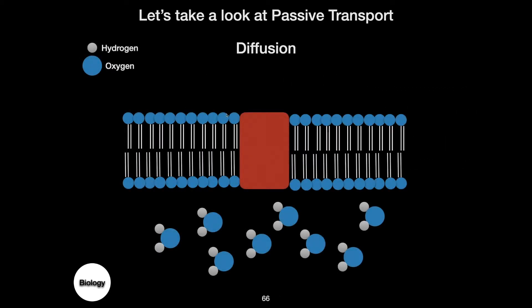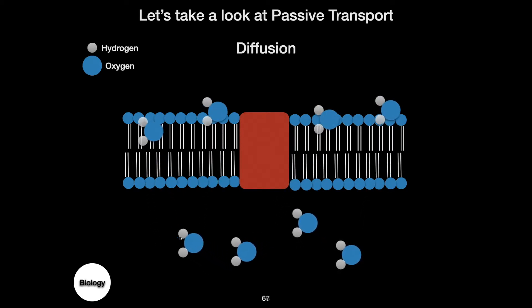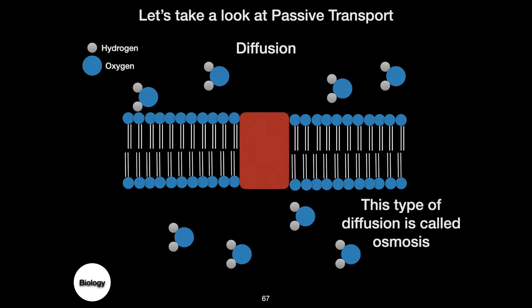Here we have our phospholipid bilayer and an integral protein — a channel protein — but we're not going to use the protein. If you watch these molecules as they move through the membrane, you'll see that they're actually moving through the phospholipid bilayer. In this case, what we're moving is water molecules. When this happens, it is called osmosis. Osmosis is the movement of water from an area of high concentration to an area of low concentration that does not require energy and does not need to go through any carrier proteins.